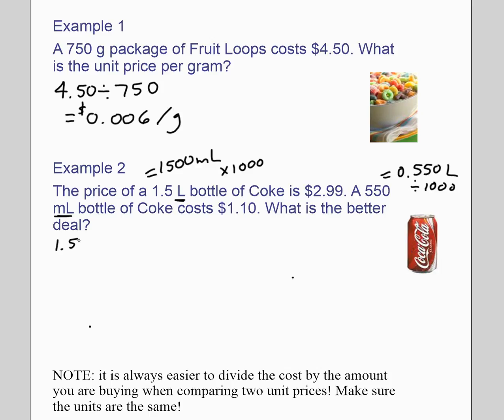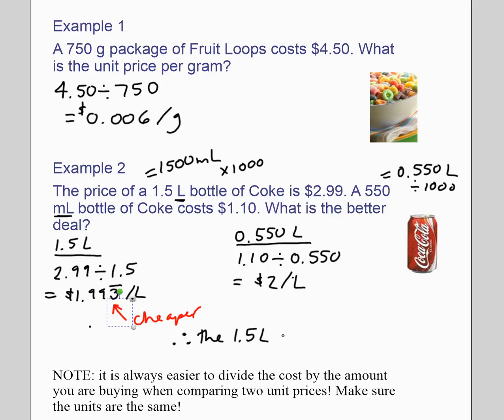Let's look at the 1.5 liter bottle. It's 2.99, so 2.99 divided by 1.5. You'll get 1.99 and then 3 repeated. So 1.993 repeating per liter. The .550 liter or 550 milliliter bottle is $1.10 divided by, make sure that your units are the same. So in this case, we use liters. And that equals $2 per liter. Which one's cheaper? Therefore, this one is cheaper. So the 1.5 liter bottle is the better deal.